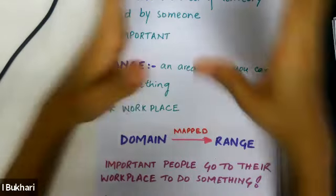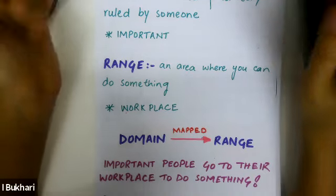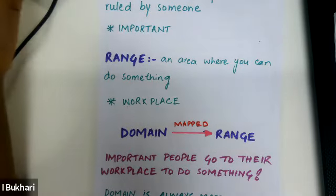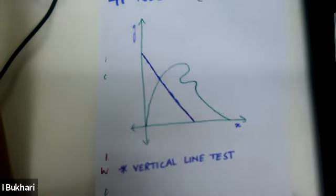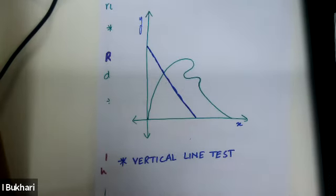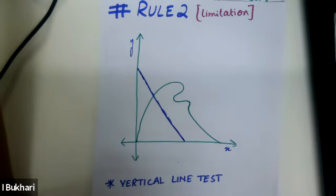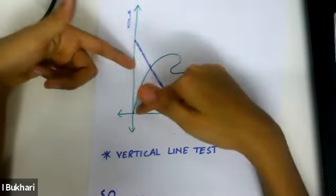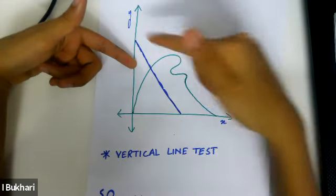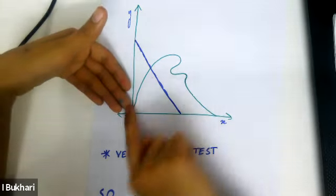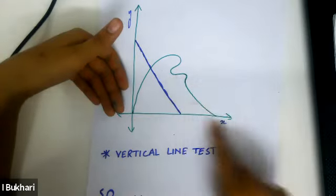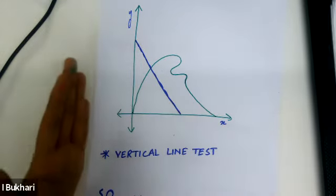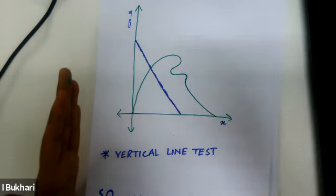Functions are really helpful in math, but there are limitations. There's a second rule I want to introduce. Looking at this line graph, there are two lines: a green squiggly line and a blue straight diagonal line. How can we confirm whether either is a function?